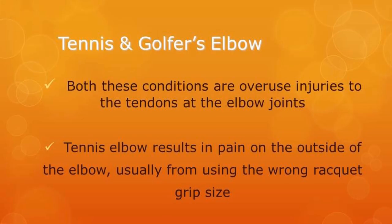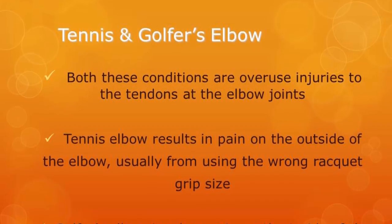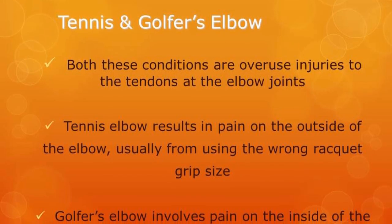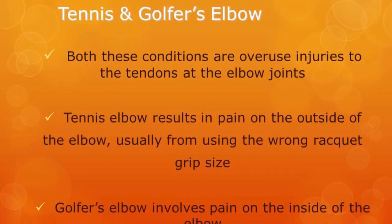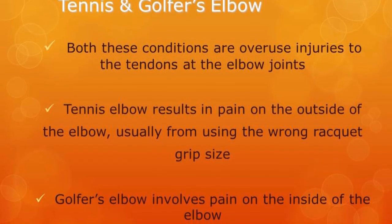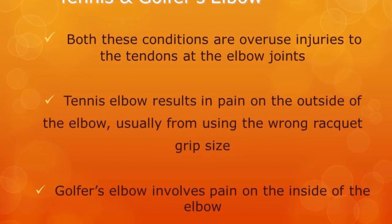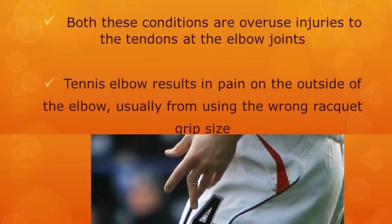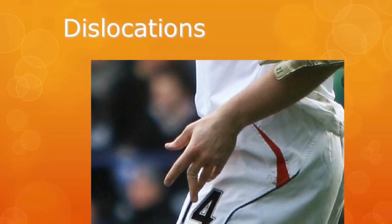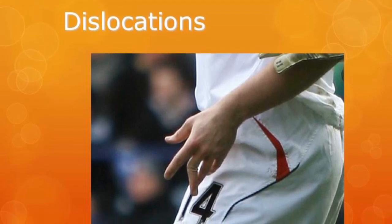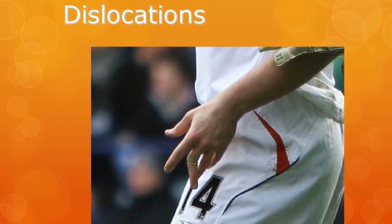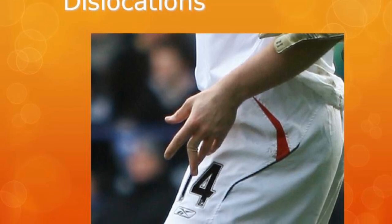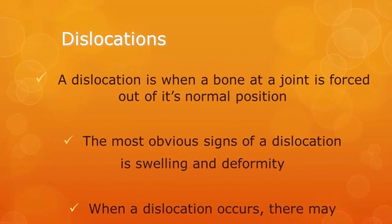Tennis and golfer's elbow are both overuse injuries to tendons and the elbow joint. Tennis elbow results in pain on the outside of the elbow, usually from the wrong grip size or the wrong racket, whereas golfer's elbow causes pain on the inside. A dislocation is when a bone at a joint is forced out of its normal position, often as a result of hard work, high-intensity exercise, or a hard blow.